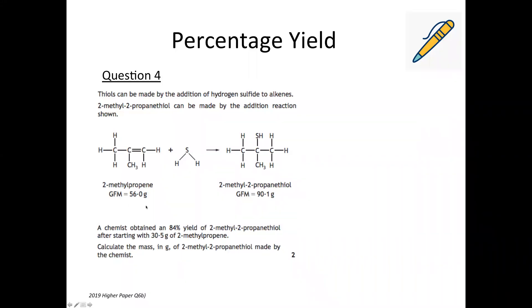So the last example is the same thing as the last one, some different chemicals. So we've got a chemist obtained an 84 percentage yield. And they started with 30.5 grams of 2-methylpropene. So one mole of the methylpropene is giving one mole of the 2-methyl-2-propanethiol. It's not always a one-to-one ratio, but it just seems to have been in the recent past exams. So one mole of that is 56 grams. One mole of this is 90.1 grams. So we find one gram, which is 90.1 over 56, and then multiply up to the 30.5 grams we've got.